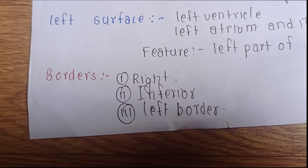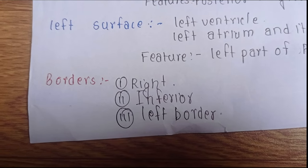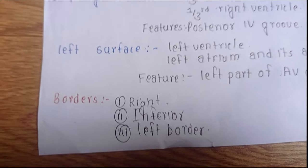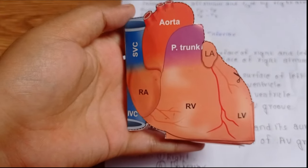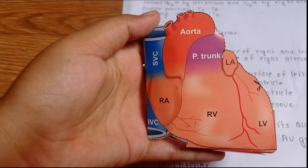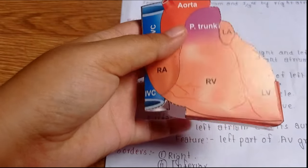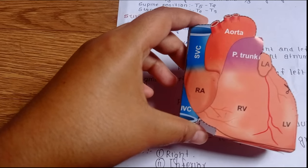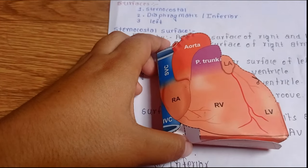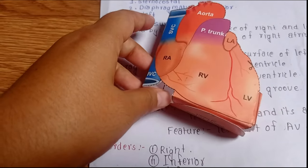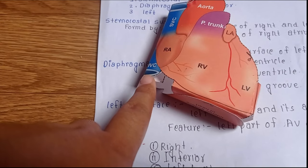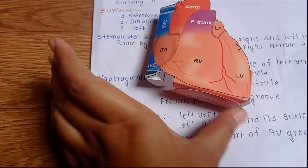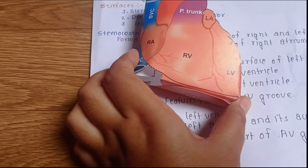Now let's go to its borders. The heart has three borders: right border, inferior border, and left border. The right border starts from the opening of the superior vena cava to the opening of the inferior vena cava — here I am holding the right border of the heart. The inferior border lies between the opening of the inferior vena cava and the apex of the heart — this one I am holding is the inferior border.